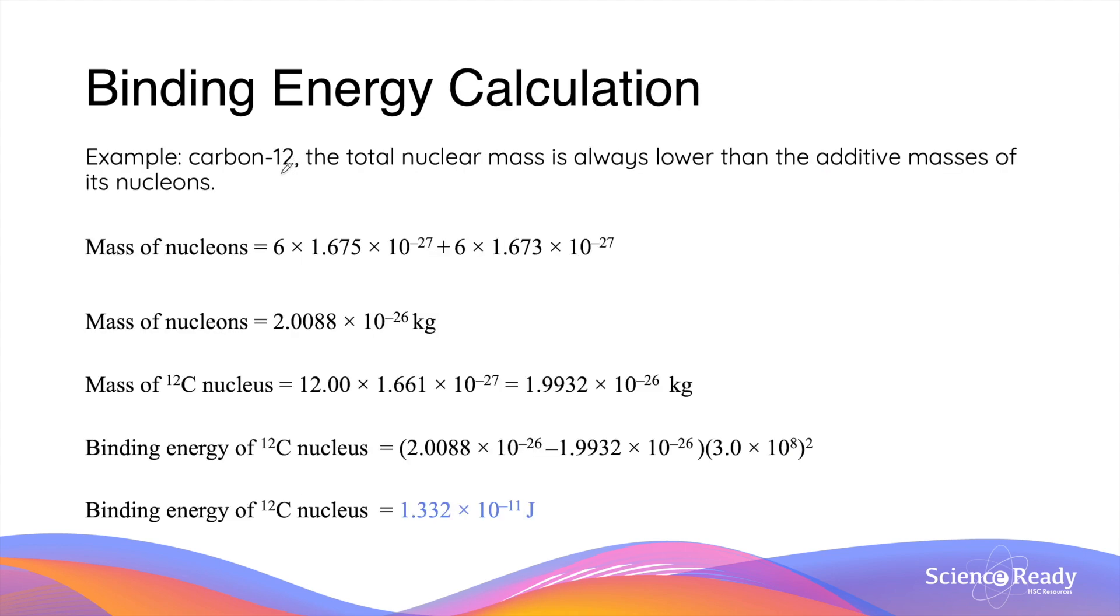Let's look at a more detailed example of calculating the binding energy. We have a carbon-12 nucleus. The total nuclear mass is always lower than the additive masses of the nucleons. In a carbon-12 nucleus, because it has an atomic number of 6, it has 6 protons and 6 neutrons.